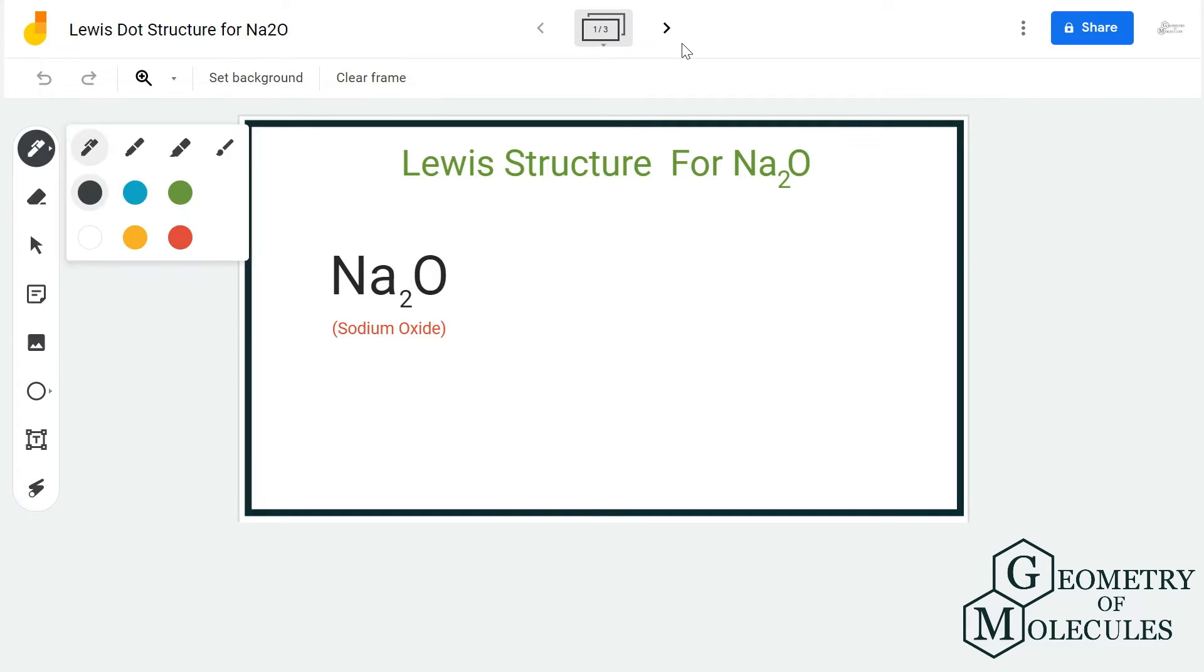Generally, molecules that are made up of metals and non-metals are known as ionic compounds. The bond formed between metal and non-metal is an ionic bond. In an ionic bond, metal donates its electrons and the non-metal accepts them.